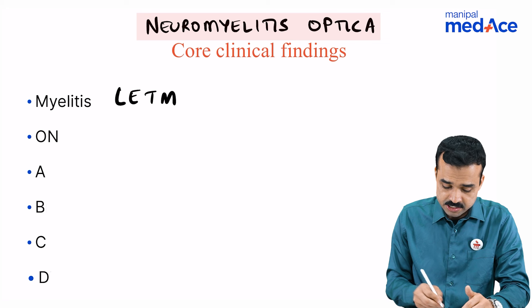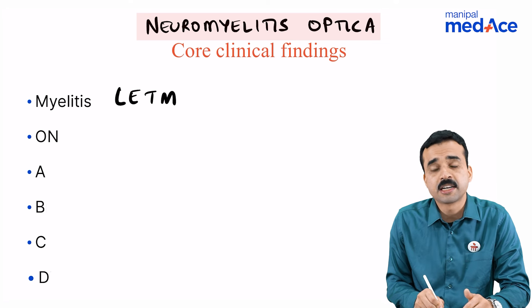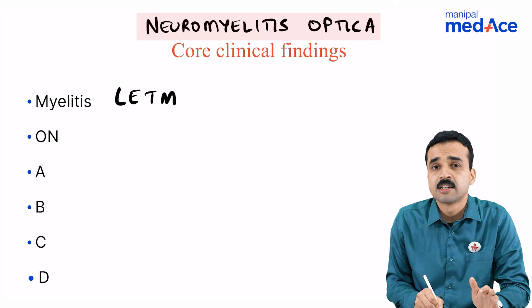Along with that, optic neuritis typically tends to occur as painless vision loss, with bilateral involvement, typically affecting the posterior aspect of the optic nerve more than half its length, leading to visual field defects and not responding well to therapy.